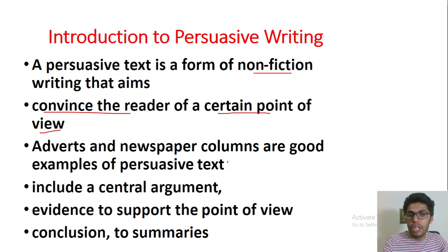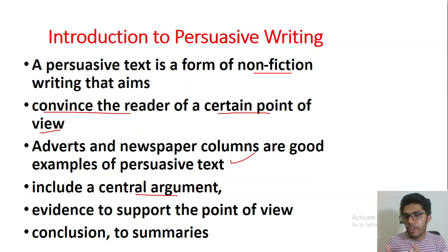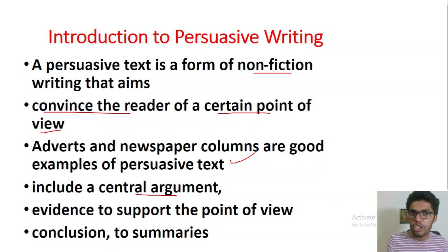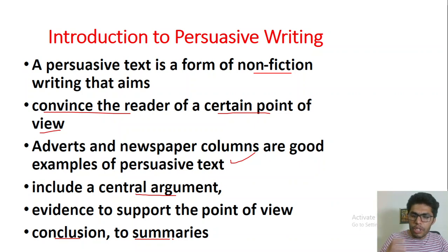In persuasive writing there is always a central argument. In most situations there are two or more sides to a controversy. In persuasive writing you select a side and then justify yourself with the help of logical arguments, supporting details, facts, quotations, and other details. You bring all of these together in your piece of writing to convince the reader of your personal point of view. You bring evidence to support that point of view and then come up with a conclusion.